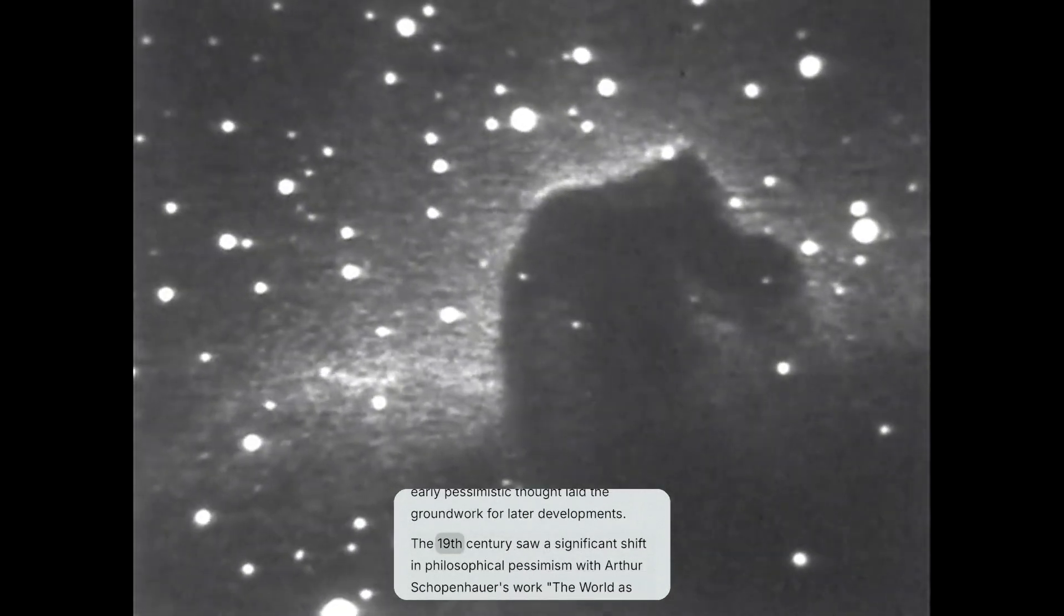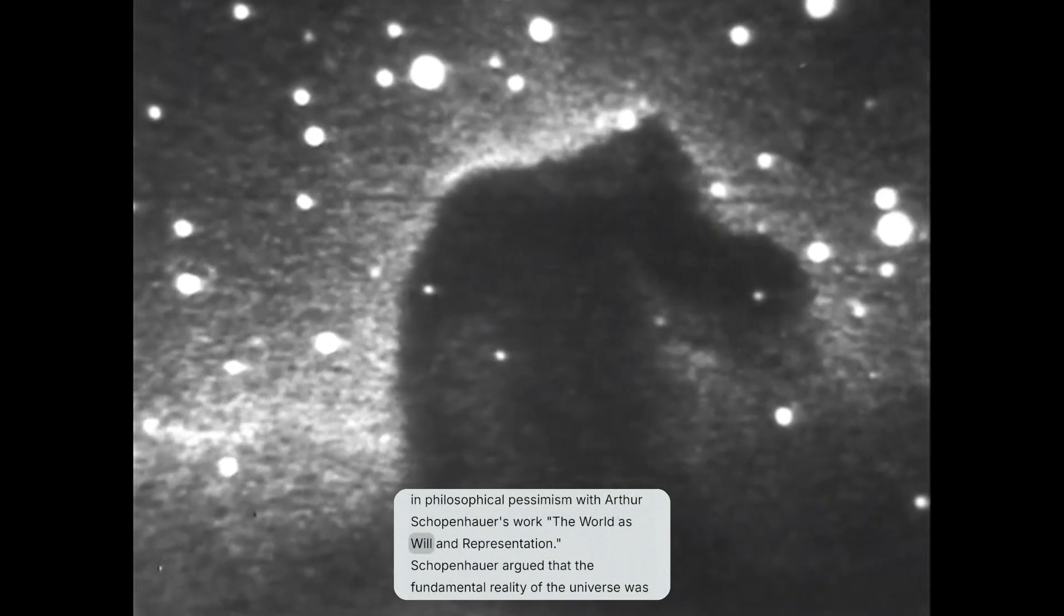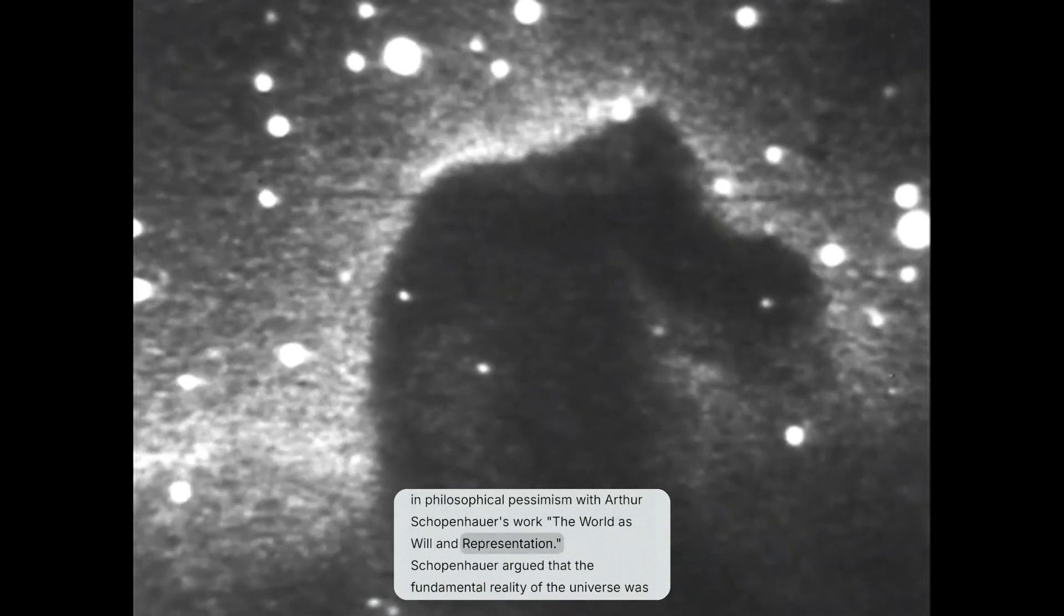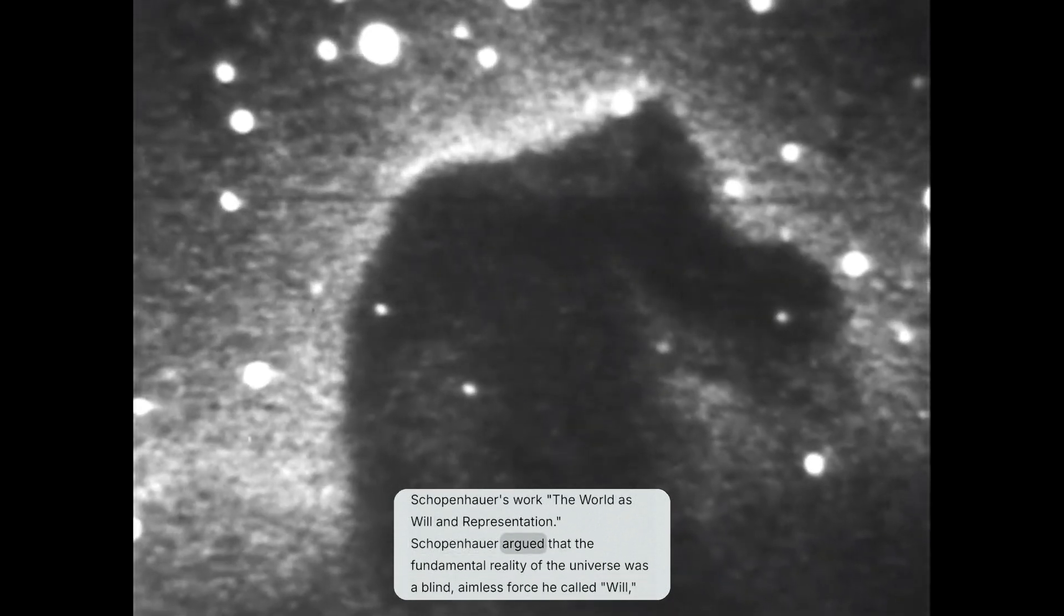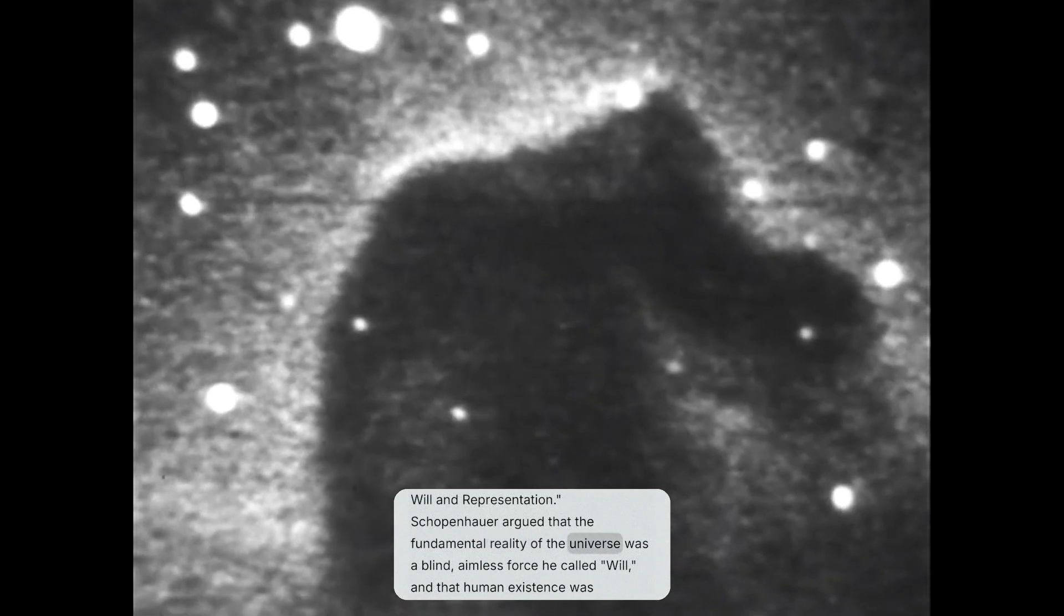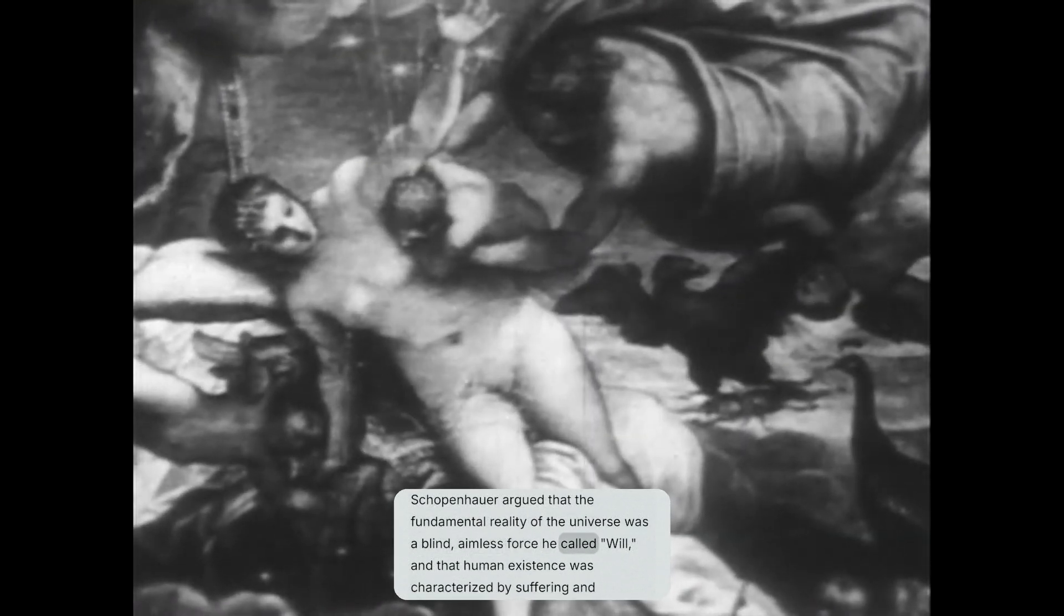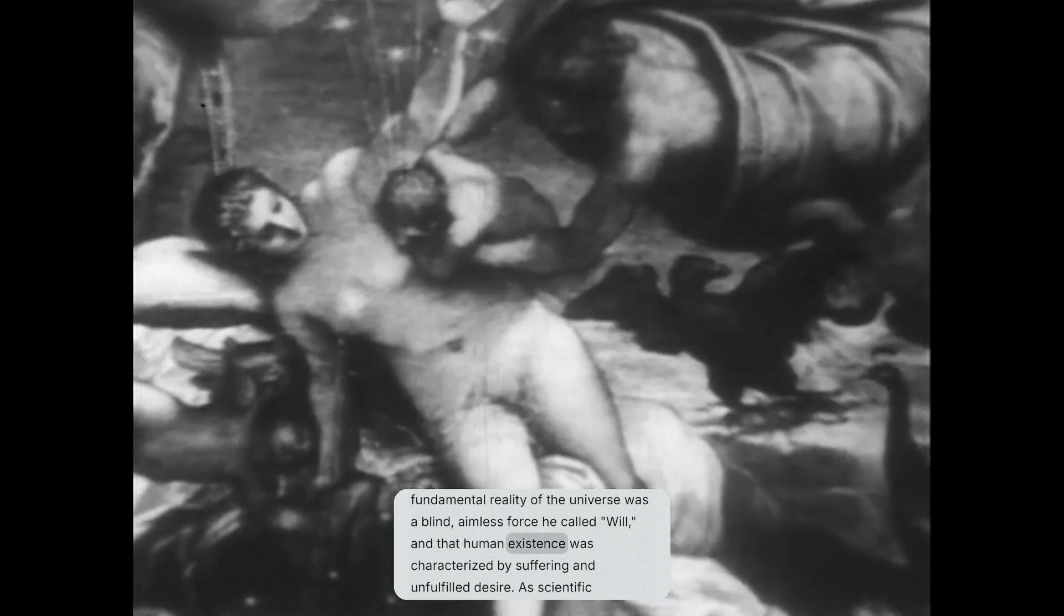The 19th century saw a significant shift in philosophical pessimism with Arthur Schopenhauer's work The World as Will and Representation. Schopenhauer argued that the fundamental reality of the universe was a blind, aimless force he called will, and that human existence was characterized by suffering and unfulfilled desire.